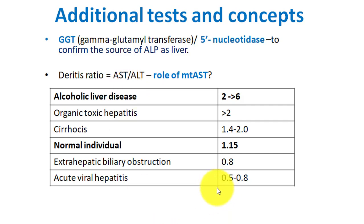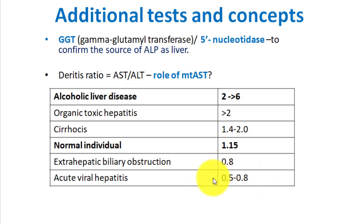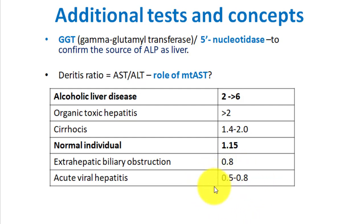In acute liver disease, ALT is very high compared to AST, because AST does not come out of the mitochondria — only the cytosolic ALT is released. Therefore, the ALT-to-AST ratio can be used to differentiate acute from chronic conditions, and chronic conditions from alcoholic liver disease. This ratio has very significant clinical implications.